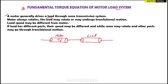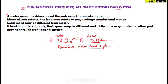The motor torque acts in the clockwise direction, and the speed of the motor is also in the clockwise direction. The load torque acts in the anti-clockwise direction. This is the equivalent motor-load system. The motor drives the load through some kind of transmission system.